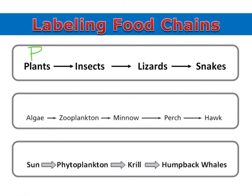Then we'll place a 1 over our primary consumer, a 2 over our secondary consumer, and a 3 over our tertiary consumer. So once I place my P over my producer, I'm basically just counting.